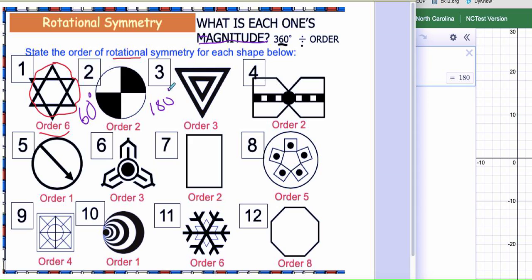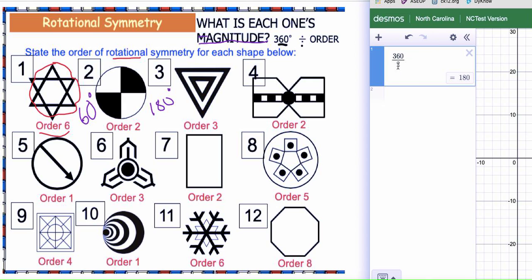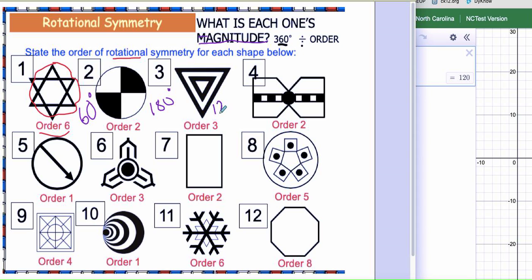Hopefully that's making sense. Okay, your order is three on this figure for number three, so 360 divided by three. So your answer over here is 120 degrees. Again, you have to have the symbol.